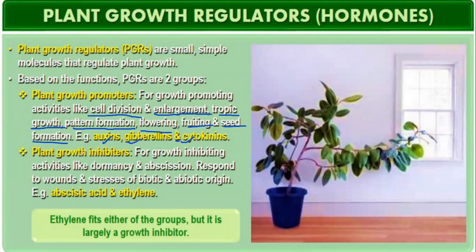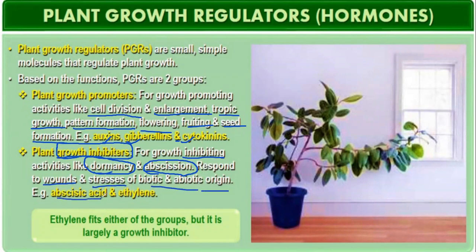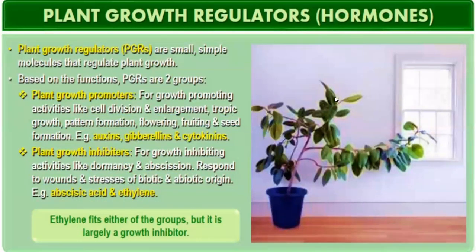Plant growth inhibitors inhibit growth activities like dormancy and abscission — they promote dormancy and abscission by inhibiting growth. They also help in the response to wounds and stresses of both biotic and abiotic origin. Examples are abscisic acid, also called ABA, and ethylene. Ethylene is an organic compound.